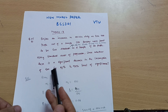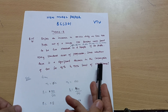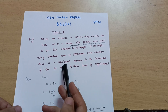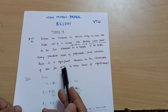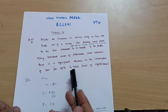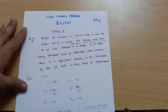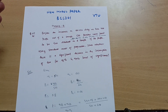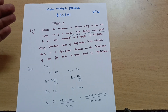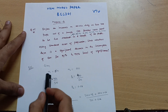Using the standard error of proportion, state whether there is a significant decrease in the consumption of tea at the 95% and 99% levels of significance. The 95% level is also called the 5% level of significance, and the 99% level is the 1% level of significance.